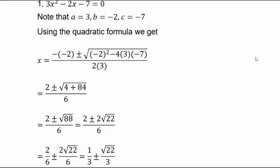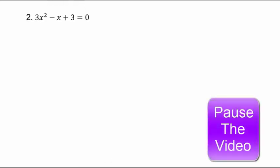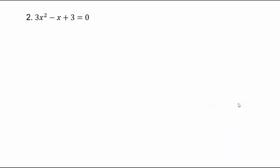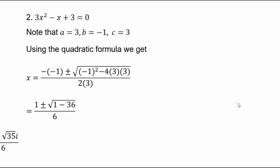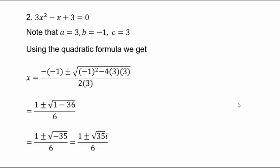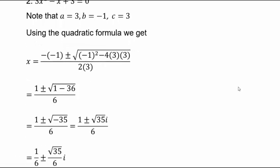For 3x² - x + 3 = 0: a = 3, b = -1, c = 3. The discriminant b² - 4ac = 1 - 36 = -35, which is negative. So there's an i outside the square root, giving ±√35 · i. The final answer is x = 1/6 ± (√35/6)i — two complex solutions.